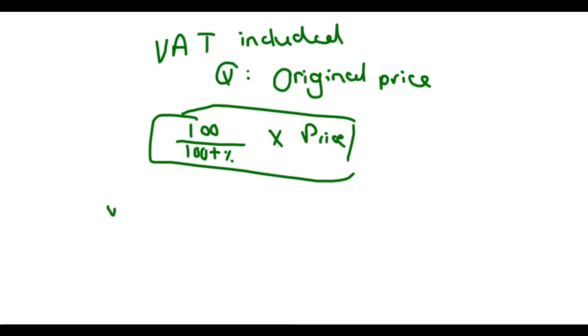In our case, to know the original price before VAT, before VAT was added, we would say 100 over 100 plus 15 percent times the price. This would be 100 over 115 times the price.